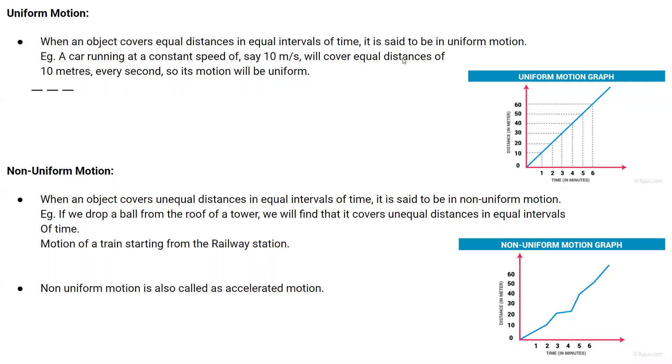Suppose a small example is given here. A car running at a constant speed of say 10 meters per second will cover equal distances of 10 meters every second, so its motion will be uniform.